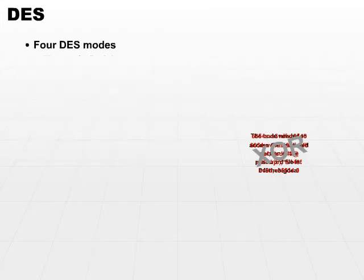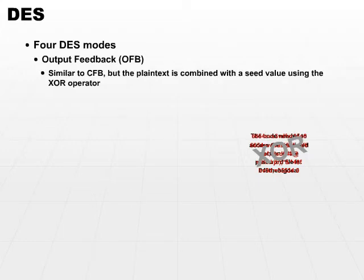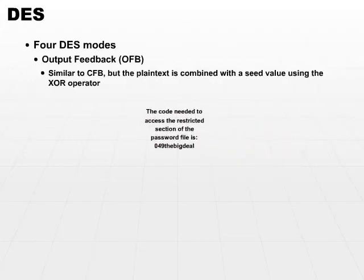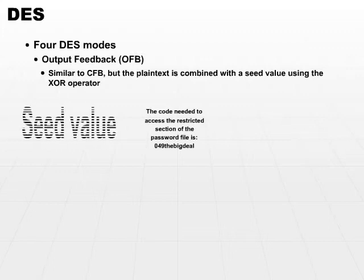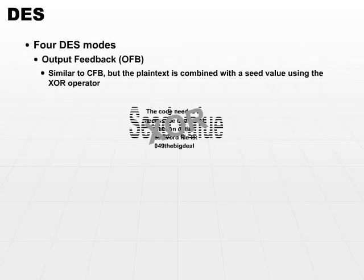The last mode is Output Feedback. Output Feedback is similar to Cipher Feedback, but the plaintext is XORed not with the previous ciphertext, but with a seed value. There has to be a 64-bit seed value that's generated randomly to start the process off. Then for every successive block, the seed value is also encrypted. We move down the chain getting feedback from the output of the previous block — that's why it's called Output Feedback.